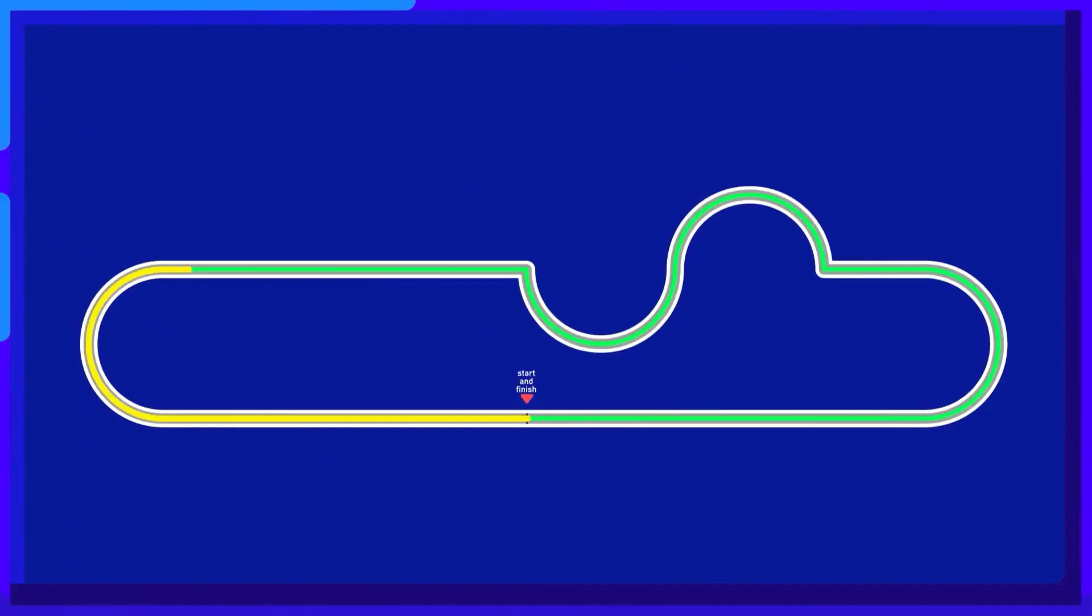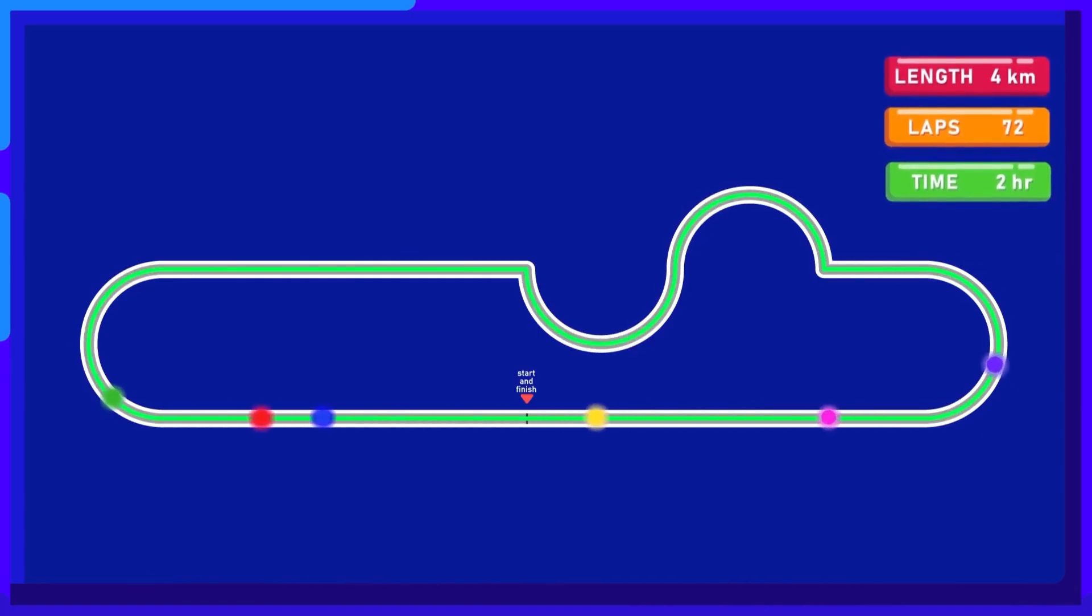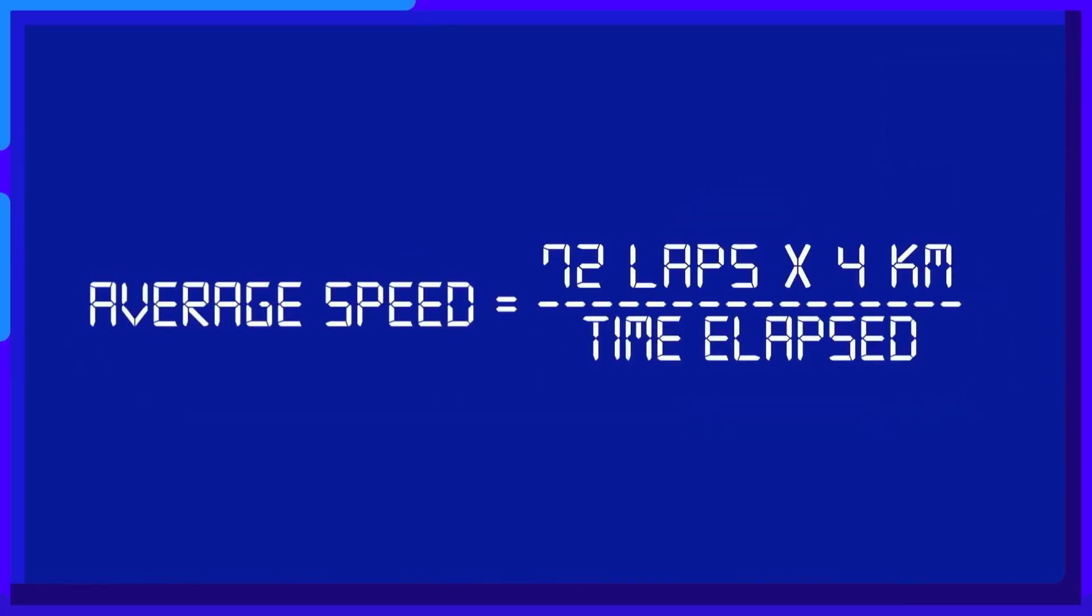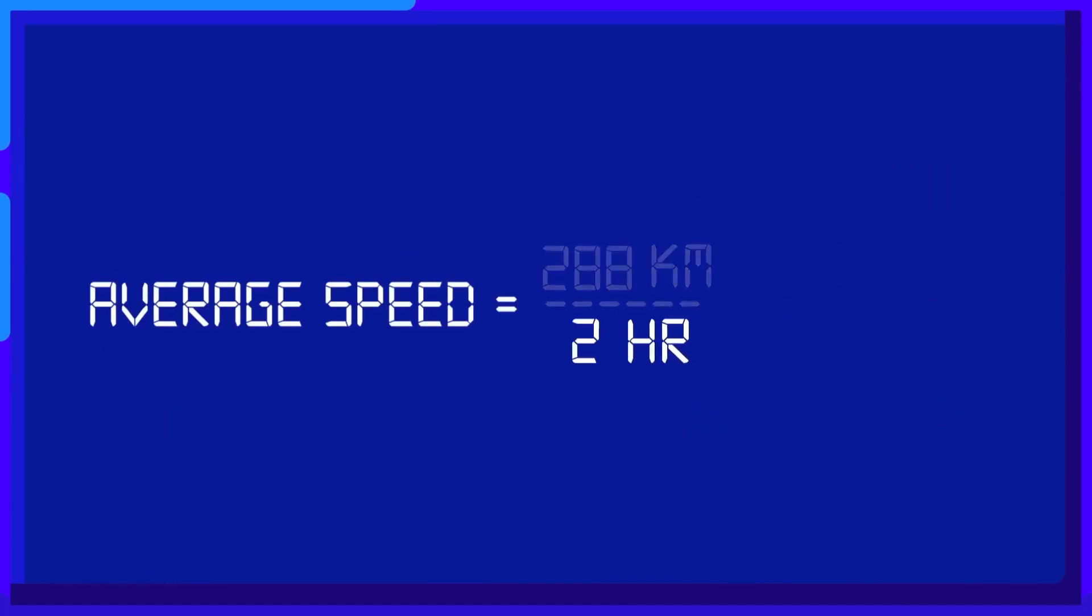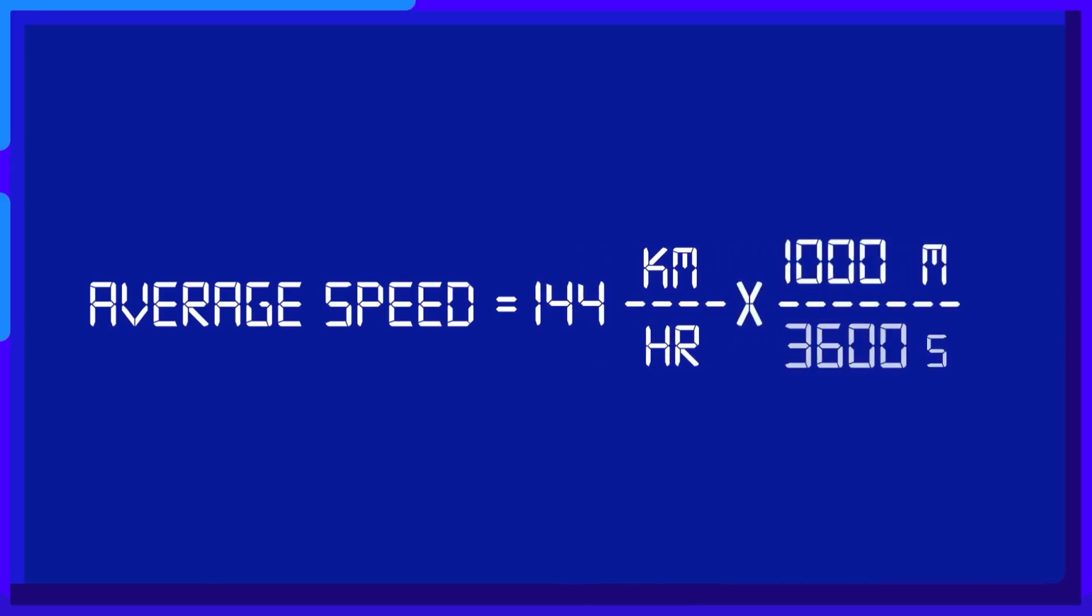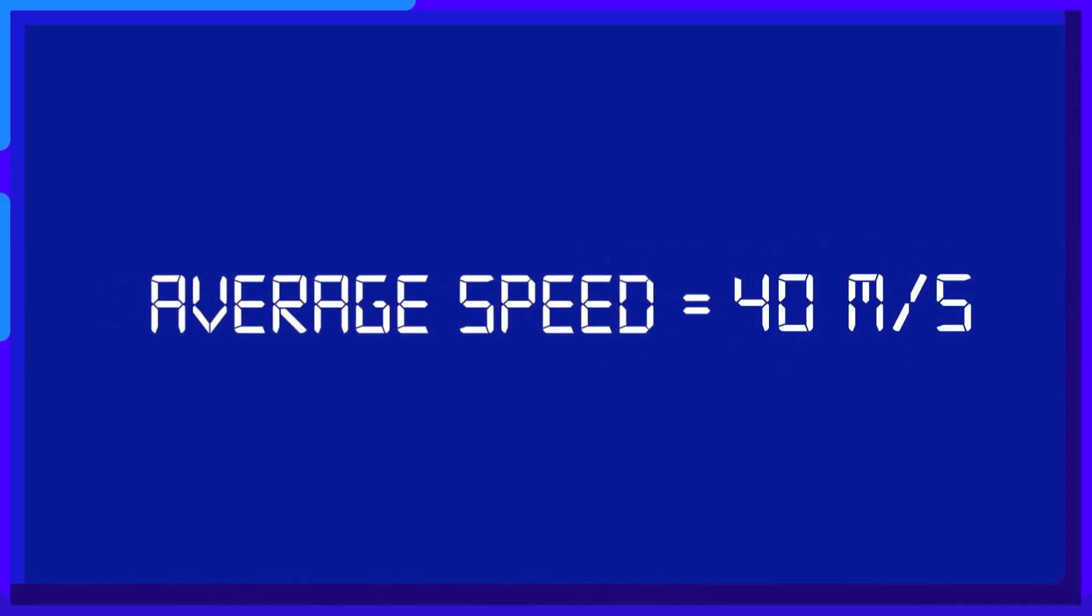For example, a Formula 1 circuit has a length of 4 kilometers, and the cars need to complete 72 laps to finish the race. The winner completes all of them within two hours. So, the total distance of the car is equal to 288 kilometers, and the winner's average speed is 144 kilometers per hour. Converting the units into SI units, we can determine that its average speed is 40 meters per second.